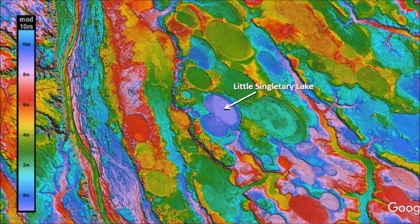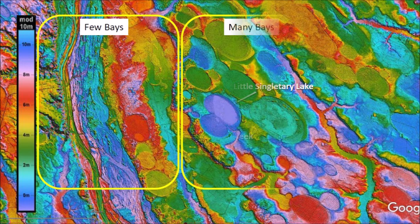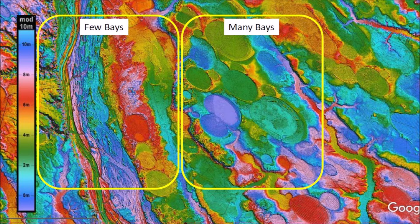We will start by getting familiar with the neighborhood of Little Singletary Lake. I am using the LiDAR visualization tool for Google Earth by Michael Davies — there is a link in the video description. The Cape Fear River and Harrison Creek are located to the west. One of the first things we notice is that the area with the river has just a few bays on the high ground between the river and the creek, whereas the area away from the river has many Carolina Bays.